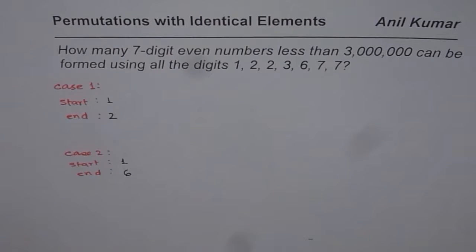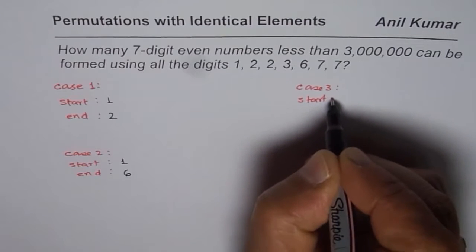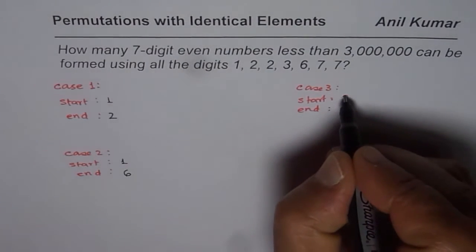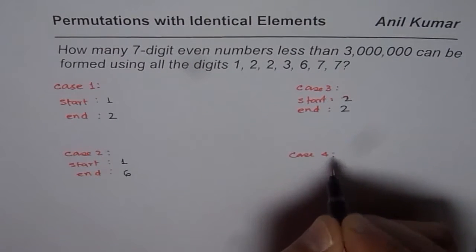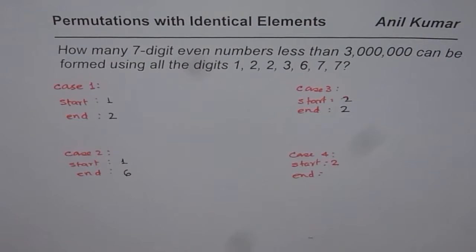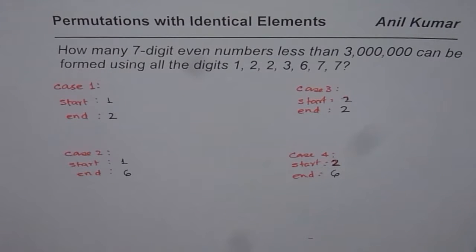There are 2 more cases. We could also start with number 2. So let there be case 3 in which starting number is 2 and ending number is also 2. Case 4: let's start with 2 and end with number 6. These are 4 different cases. So once we get the permutations for all these 4 cases, then we can add them up. They're exclusive cases.